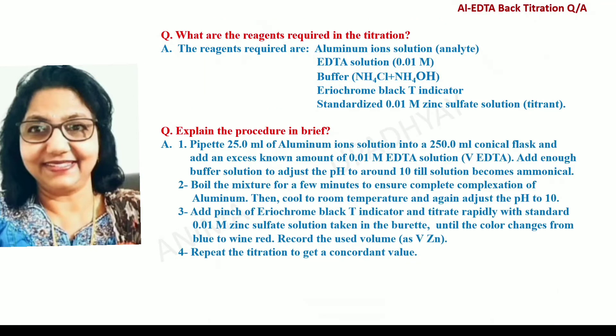What are the reagents required in the titration? The reagents required are: Aluminium ions, EDTA solution (around 0.01 molar), buffer which is a mixture of Ammonium chloride and Ammonium hydroxide, Eriochrome Black T indicator, and standard solution of zinc ions (0.01 molar), which is called the titrant.